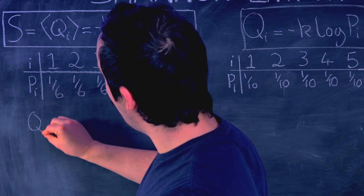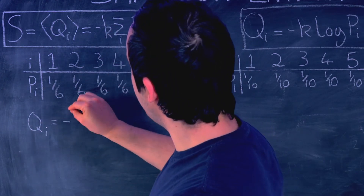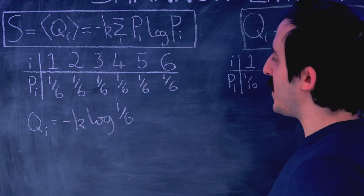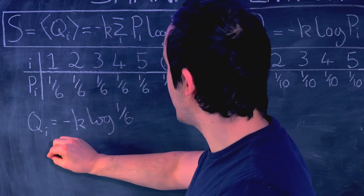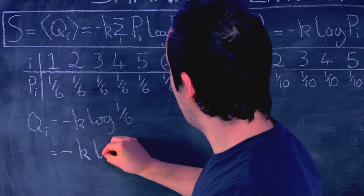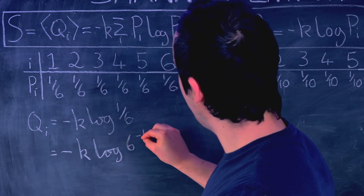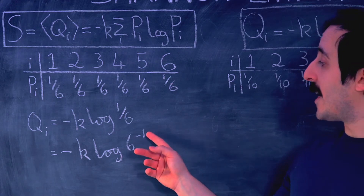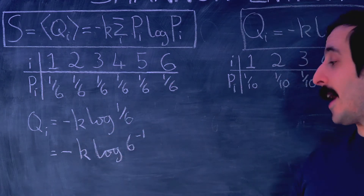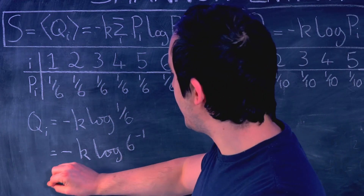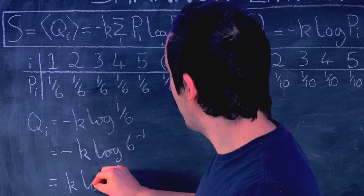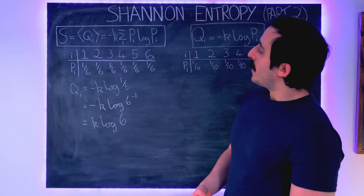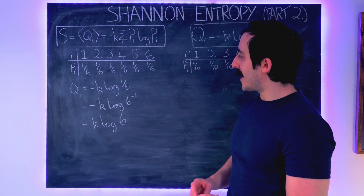So let's start calculating. First, we're going to calculate the information content for each one of these events. Because the probability is the same and the information content is only related to the probability, the information content will be the same for each event, so we only have to calculate it once. So qi, the information content for any of these events, is equal to minus k log of one over six. We know that one over six is equal to six to the minus one, so this is minus k log of six to the minus one. Using the logarithm rule to bring the power out front, this gives us k log of six, because the minus sign cancels with the minus one. So the information content for each statement is k log 6.